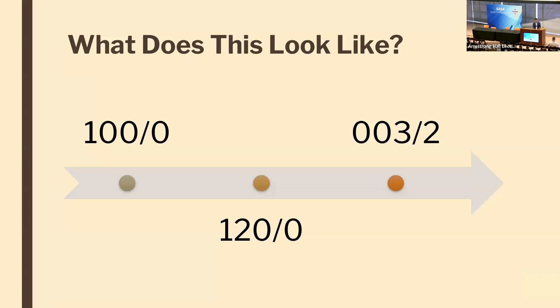In state one, you see 1-0-0-0 — a runner on first base with zero outs. In state two, 1-2-0-0 — runners on first and second with zero outs. Every half inning can be summarized in this manner.